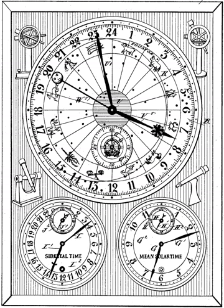Solar time is measured by the apparent diurnal motion of the Sun, and local noon in apparent solar time is the moment when the Sun is exactly due south or north depending on the observer's latitude and the season. A mean solar day — what we normally measure as a day — is the average time between local solar noons. Earth makes one rotation around its axis in a sidereal day, during which it moves a short distance along its orbit around the Sun.